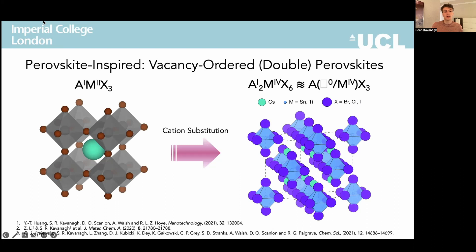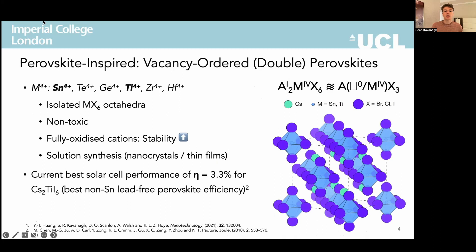In this structure the perovskite AMX3 motif is doubled and the divalent B-site cation — i.e. lead in lead halide perovskites — is partially replaced with a tetravalent cation, with 50% of the cation sites left unoccupied to satisfy charge balance. Key properties include a non-toxic composition and fully oxidised cations, affording much improved thermodynamic stability compared to the partially oxidised NS2 lone pair cations in the prototypical tin or germanium perovskites.